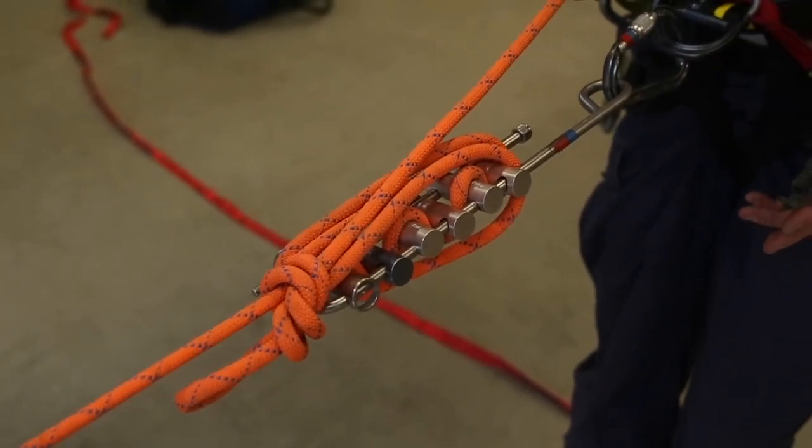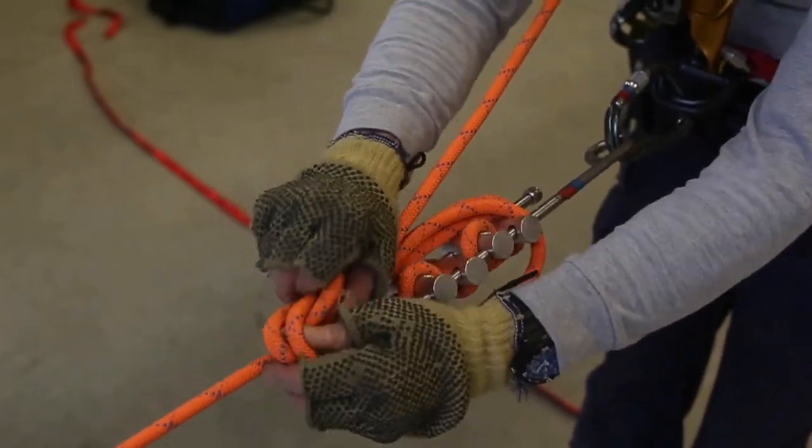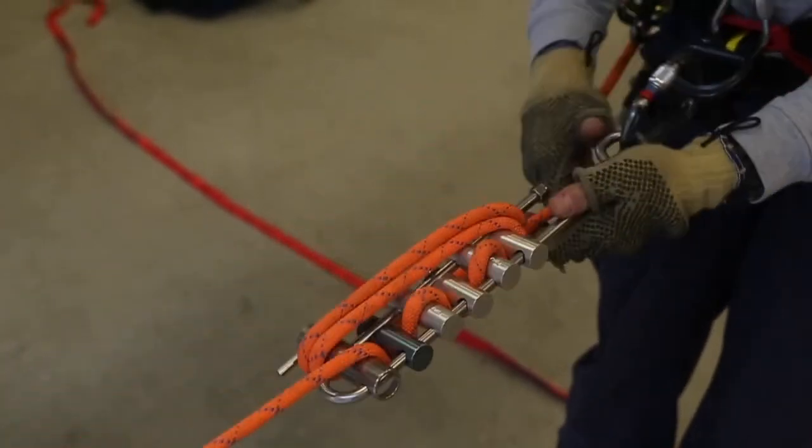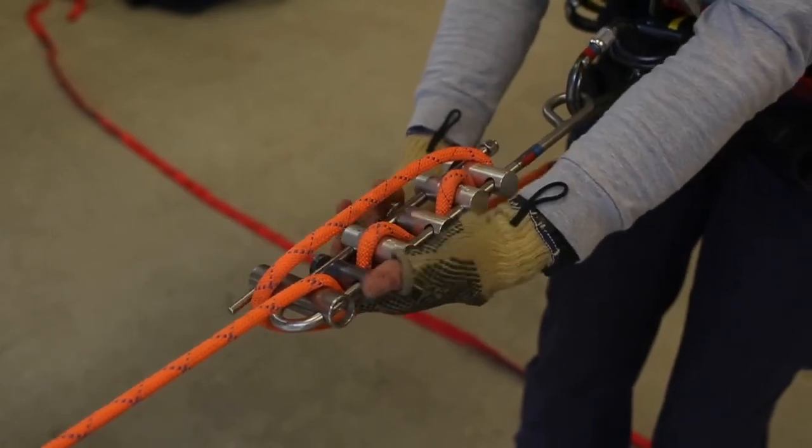When it comes time to untie the tie off, release the overhand, maintain a grip on the brake strand, unwrap and then continue your descent.